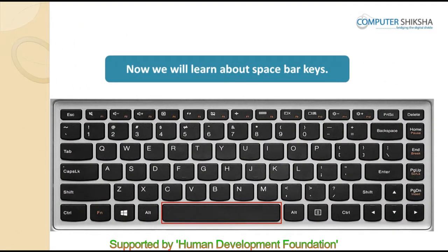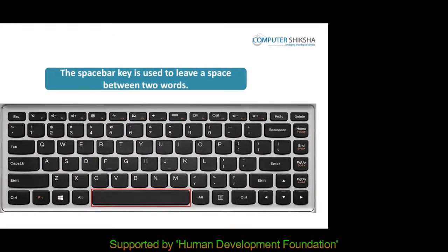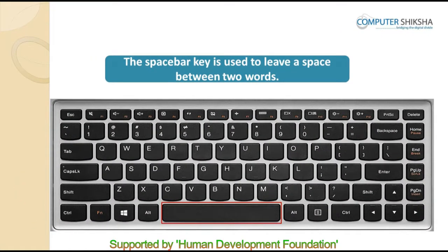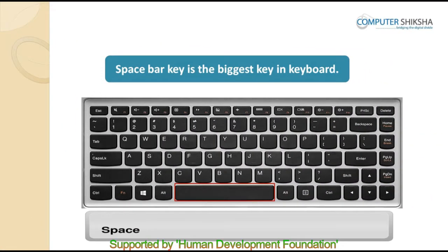Now we will learn about the space bar. The space bar key is used to leave a space between two words — just like when you write your first name and your surname you leave a space in between. Similarly, when we write on our computer, we leave spaces between two words by using the space bar. Note that the space bar key is the biggest key on the keyboard.